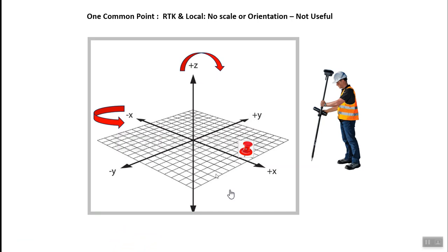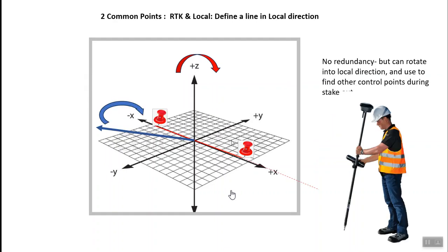Let's take a look at what we're trying to accomplish. If we go out in the field and take a single shot on a single point, if I have one common point, that doesn't do much geometrically because I can be rotating around the X and Z axis — so it's not going to do me much good. If I hit a second point, let's imagine the blue line represents true north that GPS is on. If I hit a second point on the local control and define a one-step, it will then allow us to rotate into that orientation.